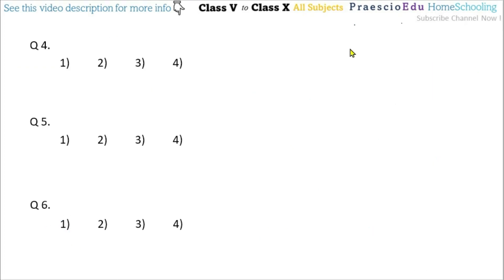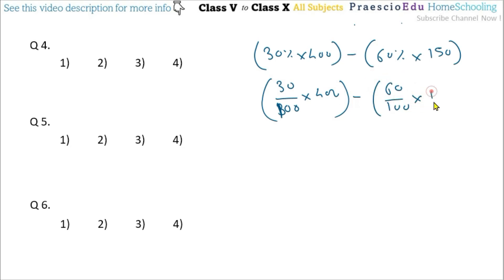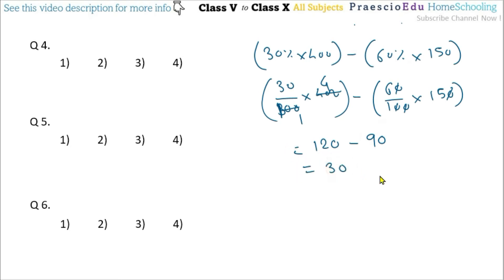Question number 4: How much is 60% of 150 less than 30% of 400? Since 30% of 400 is the bigger value, we calculate: (30/100 × 400) minus (60/100 × 150). This gives 30 multiplied by 4 = 120, minus 6 multiplied by 15 = 90. So 120 minus 90 equals 30. The answer is 30, given in option number 2.